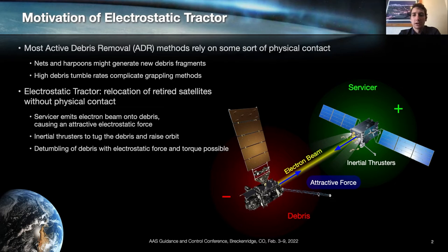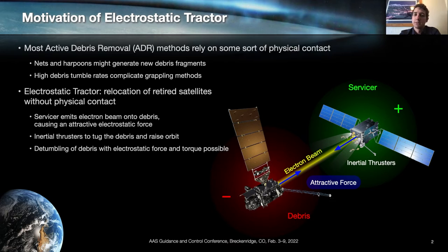The electrostatic tractor is an active debris removal method and in contrast to other debris removal methods it doesn't rely on any sort of physical contact, and that has some advantages. For example, if you use nets or harpoons to capture debris you might generate new fragments of debris, which is not helping the overall debris environment.